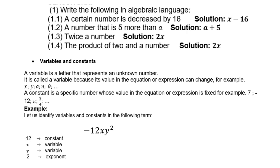A number that is 5 more than a. A is already the variable, so more means plus. Therefore a + 5. Twice a number, where the number you can call x, then twice means 2 times x. And the product of 2 and a number will therefore be 2x.